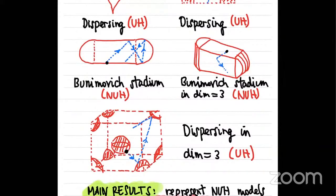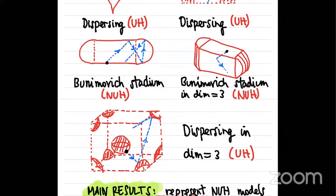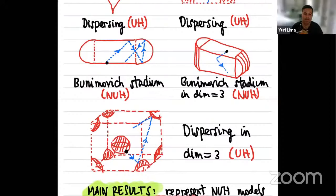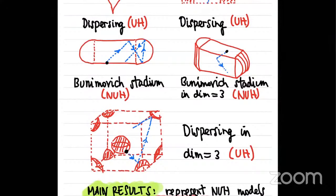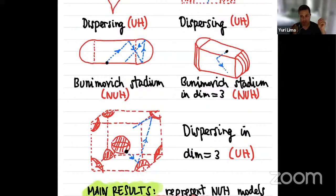There is a question about whether uniform or non-uniform hyperbolicity depends on the shape of the billiard table. The answer is that it depends not on how irregular the shape is, but on whether the boundary is concave or convex.